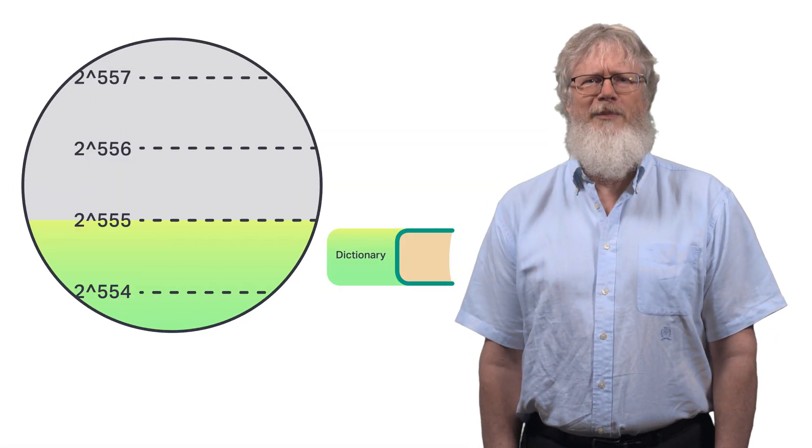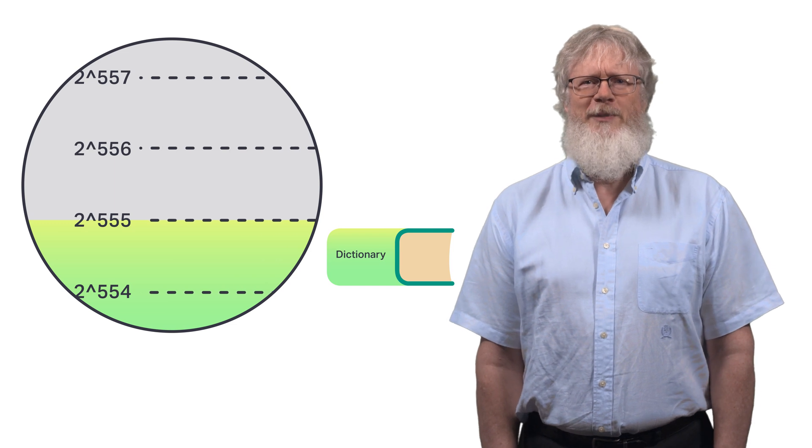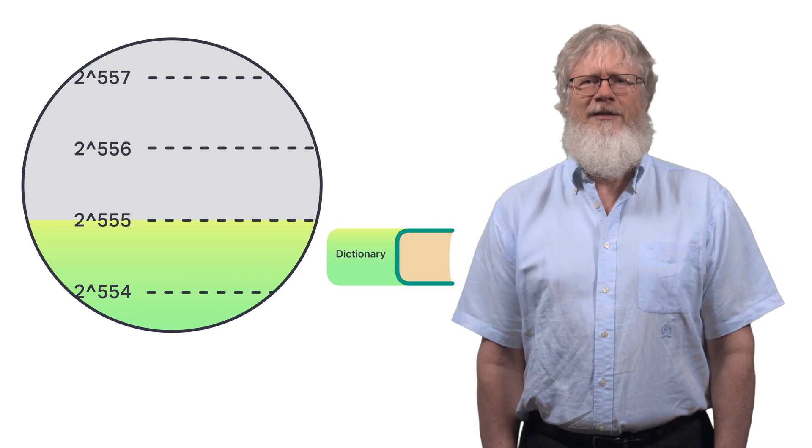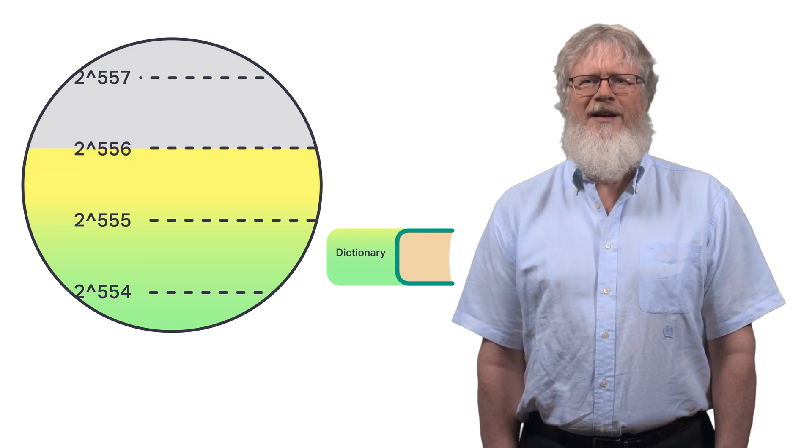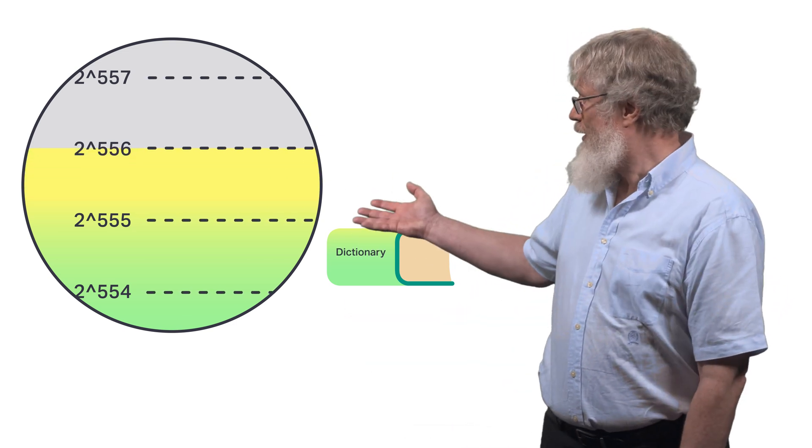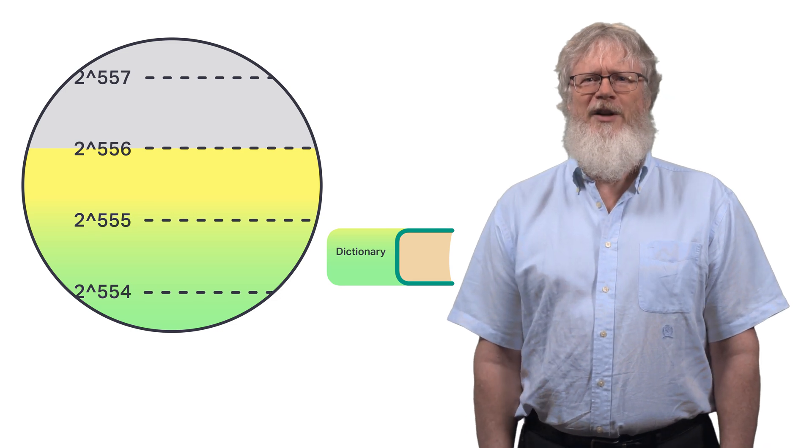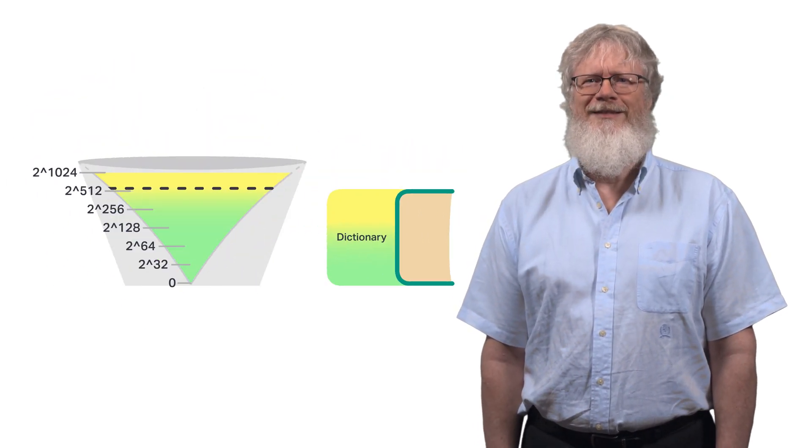Say I needed to carry one more bit, 556 bits in each of these sentences. That means I need a dictionary of 2 to the 556. It doesn't look like much more on this log scale, but it's twice as many sentences in the dictionary.